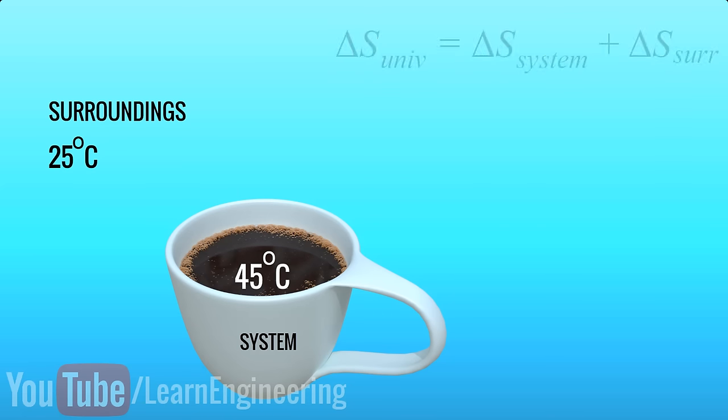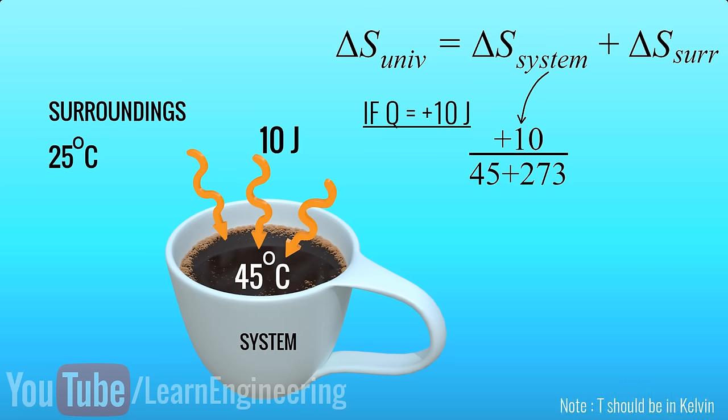Assume the tea is absorbing heat, a heat of 10J. So entropy change of hot tea is 10 divided by temperature of the hot tea. The same heat amount is lost by the surroundings. So the entropy change of the surroundings is minus 10 divided by the temperature of the surroundings.